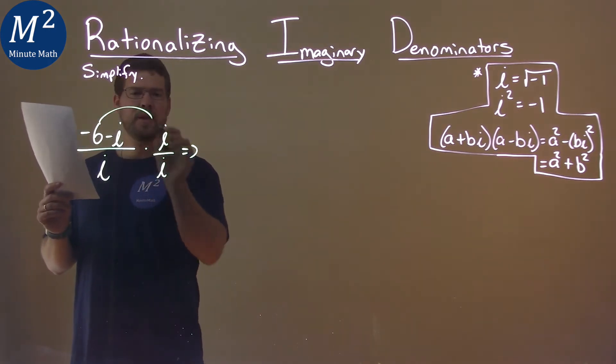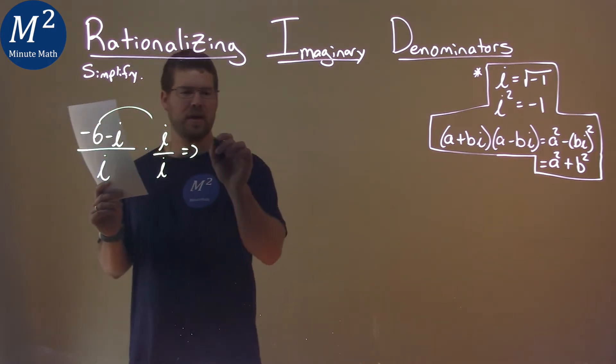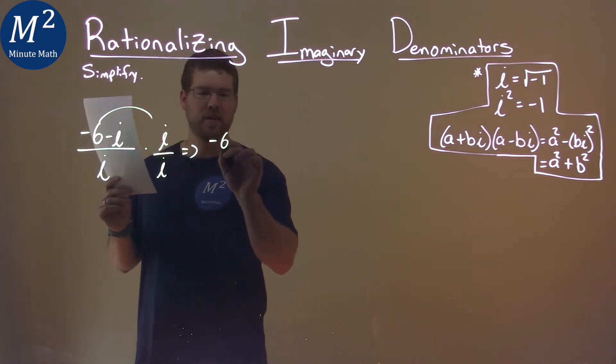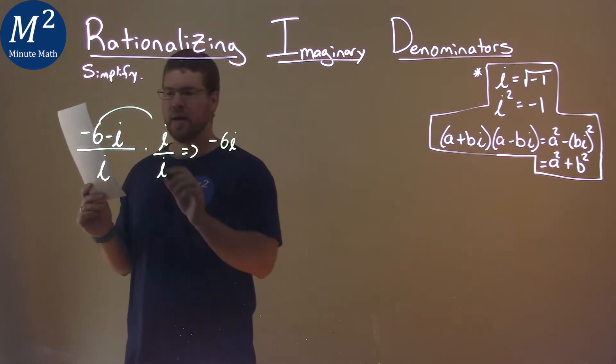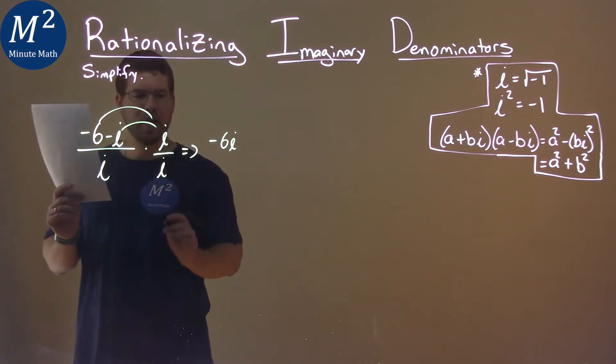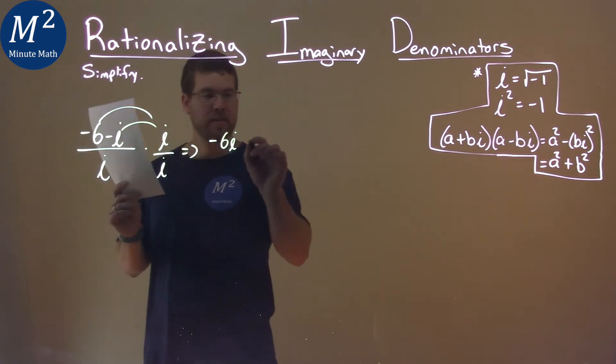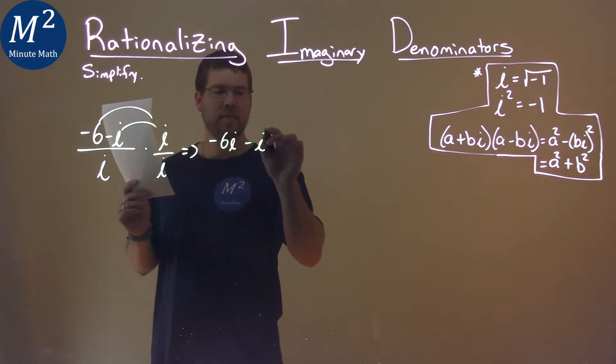we have to distribute. Negative 6 times i is negative 6i, and negative i times i is negative i squared.